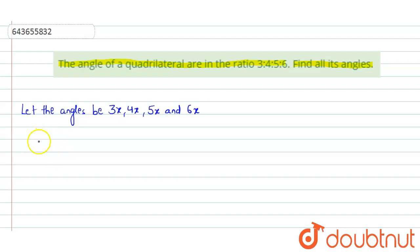So we can make an equation here. The sum of all four angles—3x, 4x, 5x, and 6x—will equal 360 degrees.